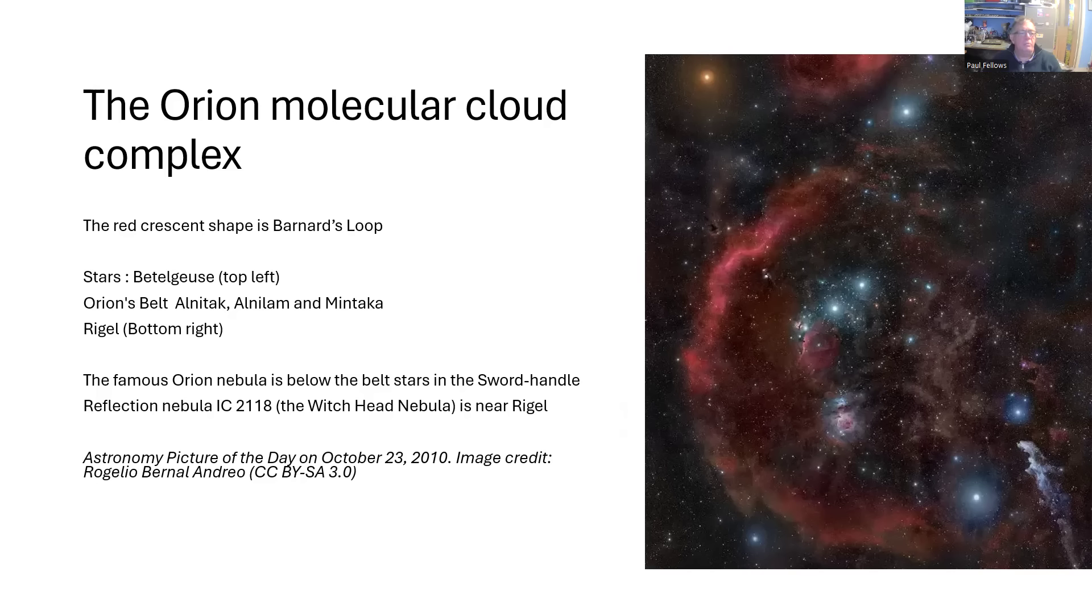We've got Rigel at the bottom right. You've got the sword handle with the famous Orion Nebula in the middle there. You've got the Witch Head Nebula, the white streak down to the lower right, being lit up by the power of Rigel there. And this image was Astronomy Picture of the Day, published on the NASA website back in 2010. It's amazing. And you can see the author's name there. I think it's so good he needs an individual credit for that one.